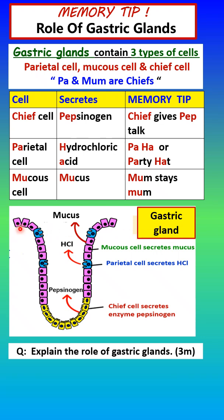Here we have a picture of a gastric gland. This pit here is the gastric pit. You have the mucus cells here that secrete mucus, parietal cells that secrete hydrochloric acid, and the chief cells below that secrete the enzyme pepsinogen, which is activated to become pepsin.